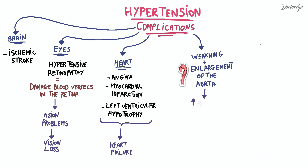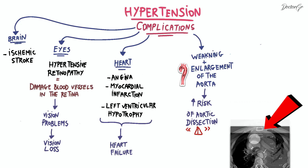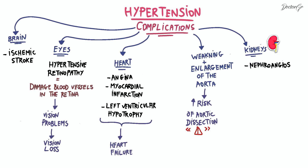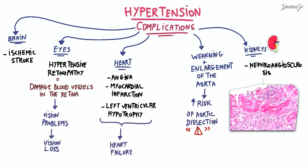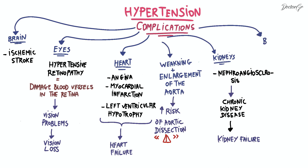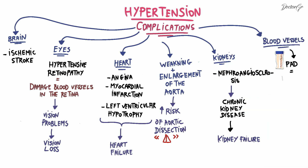Uncontrolled hypertension can also affect the aorta, increasing the risk of aortic dissection — a potentially life-threatening condition. Persistent high blood pressure can damage blood vessels in the kidney, leading to nephroangiosoclerosis, which can impair kidney function and may eventually progress to chronic kidney disease or kidney failure. Hypertension also contributes to the development and progression of peripheral arterial disease.